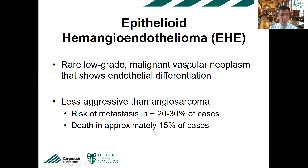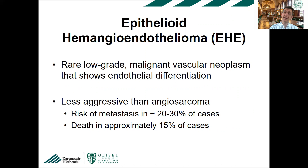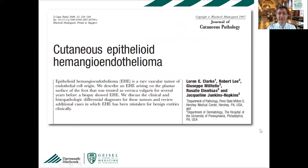Epithelioid hemangioendothelioma is now classified in the current WHO as a sarcoma — low grade but fully malignant — showing primitive endothelial differentiation. You will not see well-formed vascular structures. It's important to diagnose because it's less aggressive than epithelioid angiosarcoma, with a risk of metastasis of 20-30% and death in approximately 50%. However, cutaneous epithelioid hemangioendothelioma behaves much better than visceral cases. It can be seen everywhere but most commonly involves soft tissue, bone, lung, liver, and skin. Clinically it's non-descriptive, not resembling a vascular tumor.